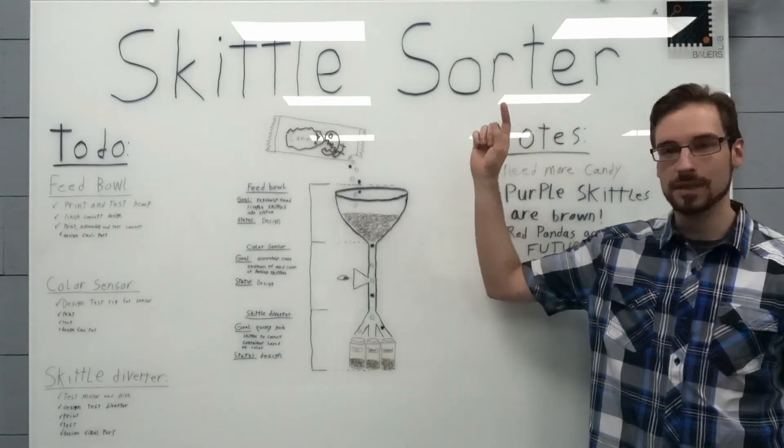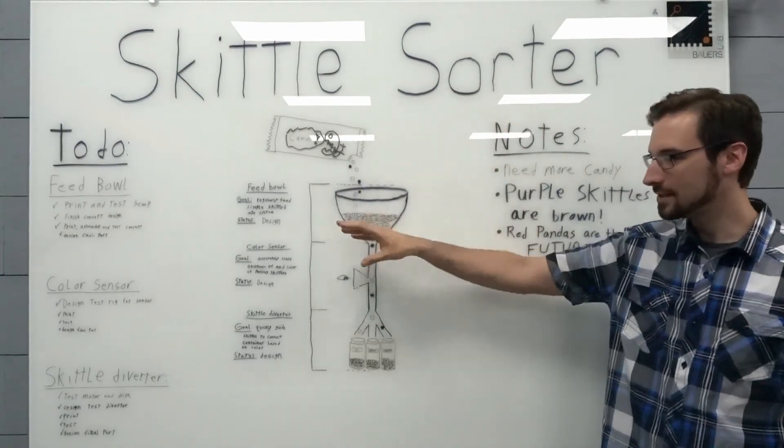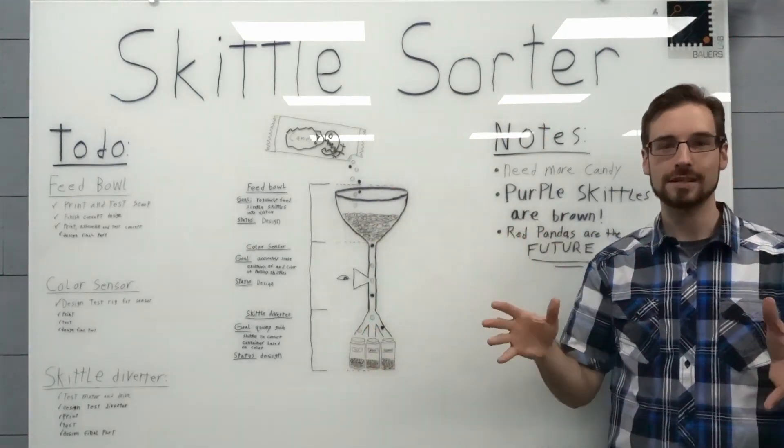So join us next time as we combine the feed bowl, the sensor, and the diverter into one Skittle sorting machine.